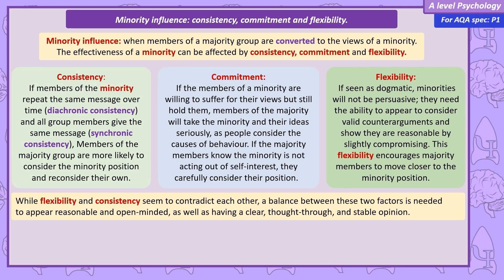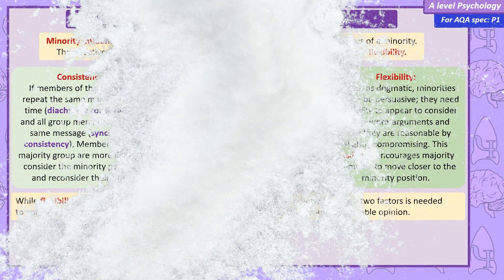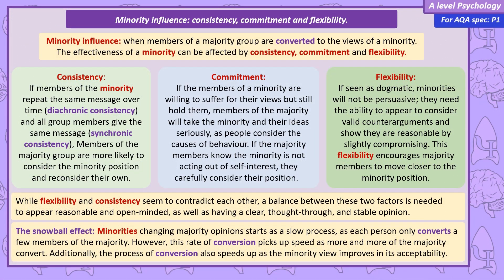A final point in minority influence not mentioned directly on the spec, but which can be used in an essay, is the snowball effect. Named after the idea that a snowball rolling downhill starts small but builds up in size quickly — potentially becoming an avalanche. Minority influence often starts as a slow process, with each person only converting a few members of the majority. But if each one of those people converts more, the effect can be exponential, with the minority quickly building in size until it becomes a majority, and a view becomes more acceptable as the minority grows larger.